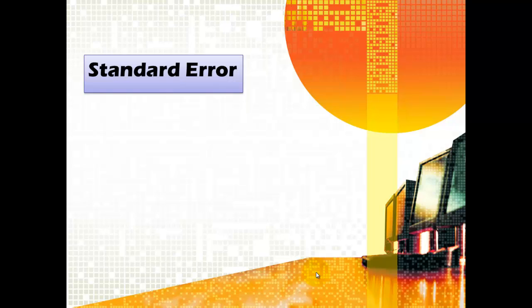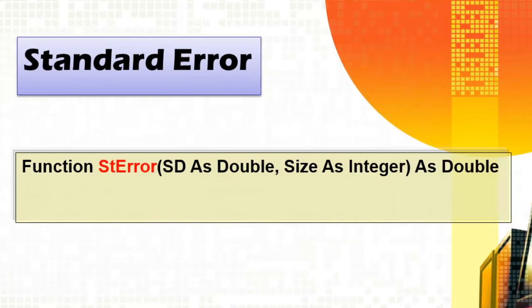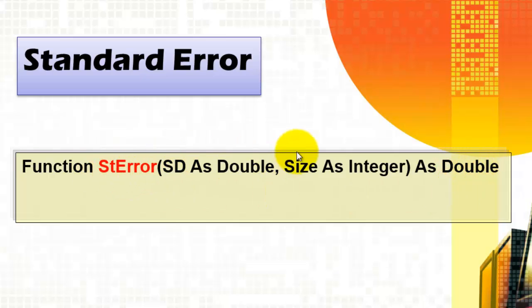It calculates the standard error — standard deviation divided by the square root of the number of cases. Type in Visual Basic the first line. Try not to make errors — no typos, please. I called the function standard_error. Like all other functions, it returns something. I decided it should return a double, which has 15-digit precision. In order to calculate it, I need two kinds of information — two arguments.